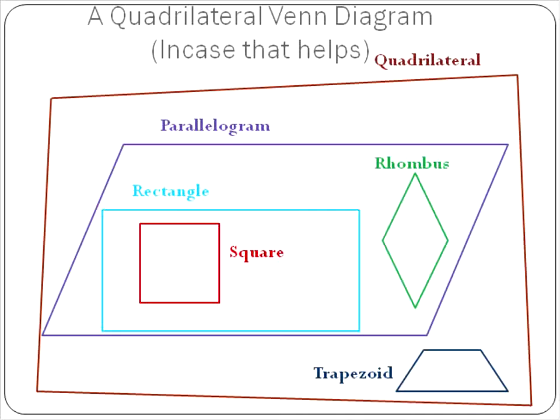So to help try and clarify, I've created a one-of-a-kind thing you won't find anywhere else - a quadrilateral Venn diagram. Usually Venn diagrams are made using circles, but I thought this would be appropriate since we're talking about quadrilaterals. So you can see the outside is a quadrilateral. All the other polygons fit inside this because all of them are quadrilaterals.